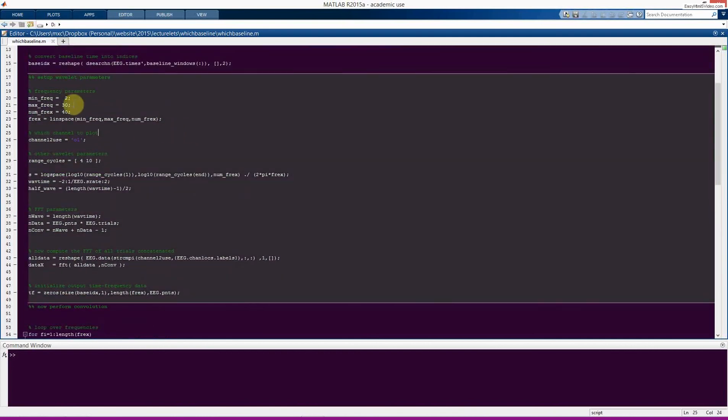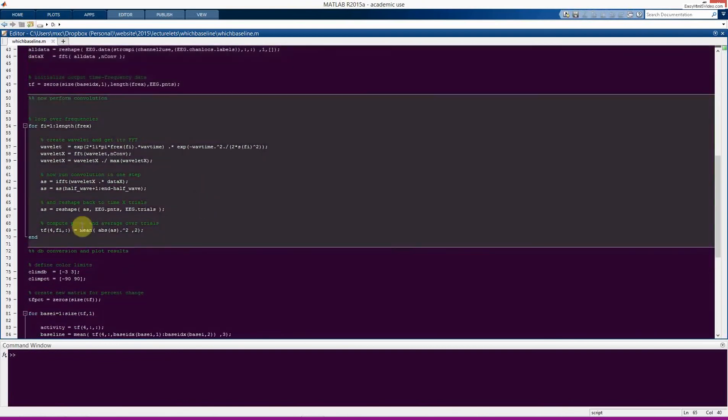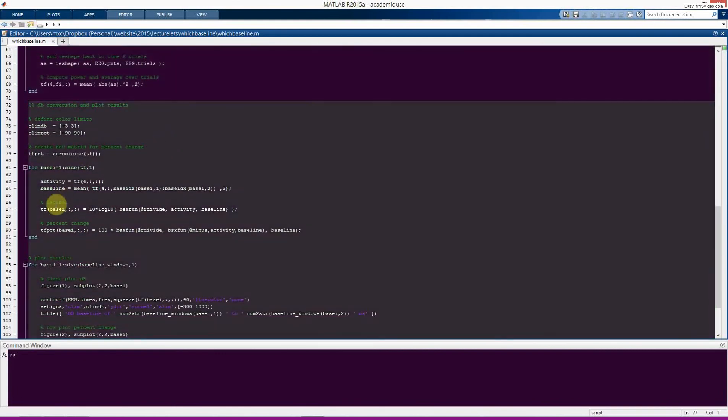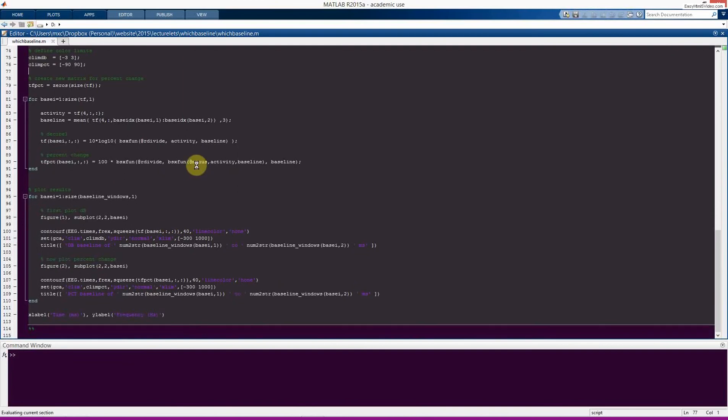Here we set up our wavelet analysis properties. We're going to use channel 01. You can, of course, change any number of these parameters. Here's where we actually do the wavelet convolution. Of course, all this stuff looks familiar. You can see that we are not actually changing any of the, we're not performing any normalization here in this plot, or in this code. Instead, all the normalization happens here. And here, I'm going to compute decibel normalization and also time frequency power change. So you can see both of these results.